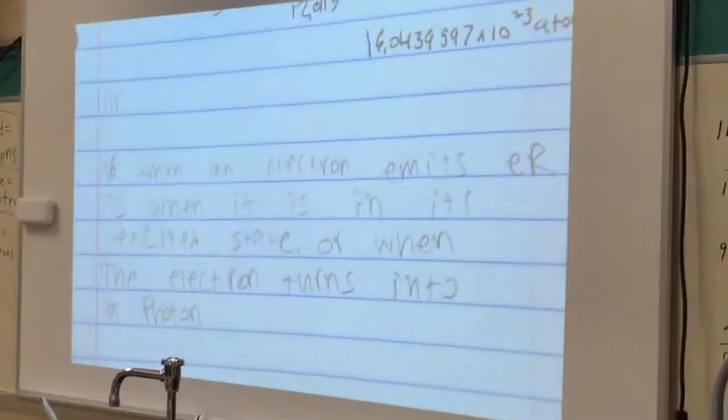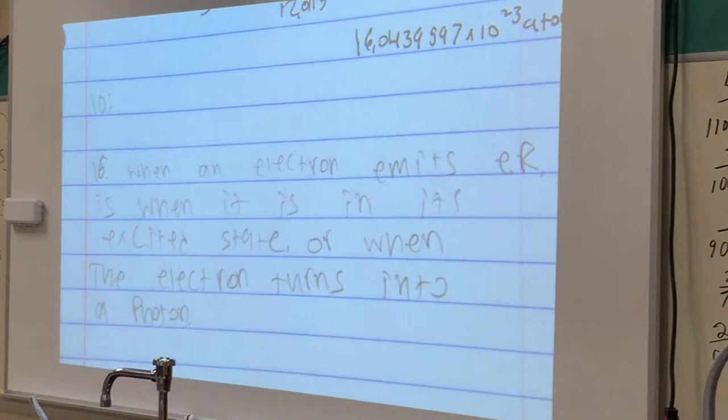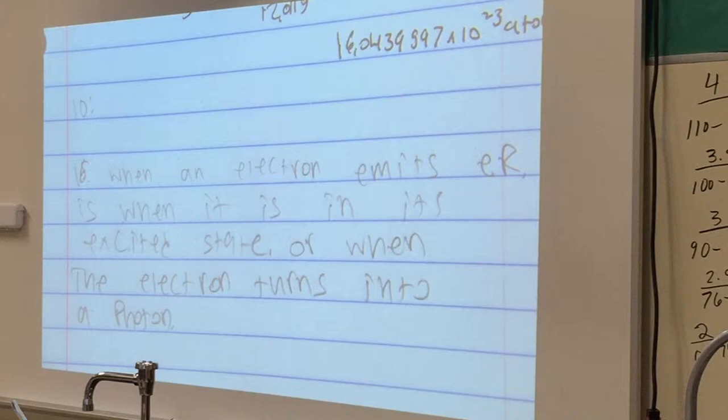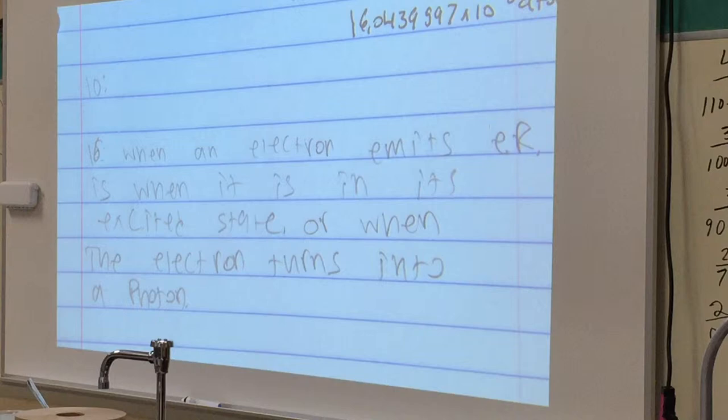When do electrons emit electromagnetic radiation? I said when an electron emits electromagnetic radiation is when it is in its excited state, or when the electron turns into a photon. And a photon is a particle of electromagnetic radiation carrying zero mass and carrying quantum of energy.